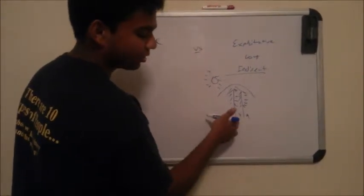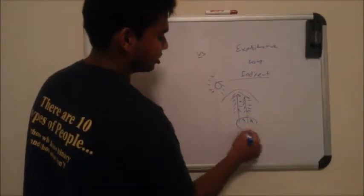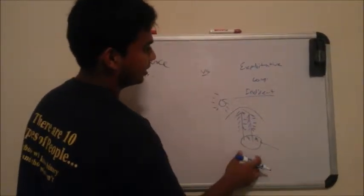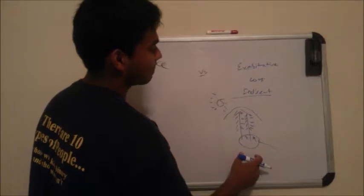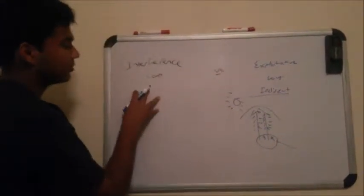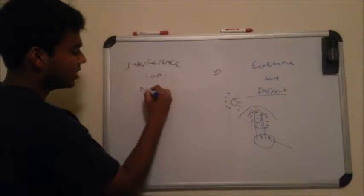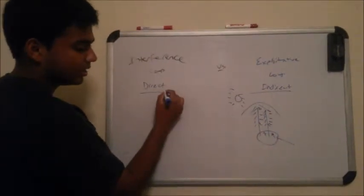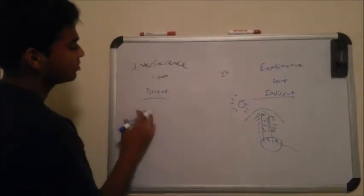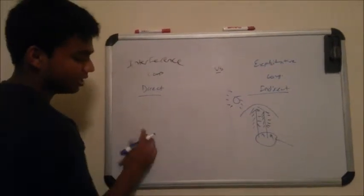The bigger trees out-compete the little trees, and the little trees are not able to survive. This is kind of indirect competition — exploitation competition. The interference competition over here is more of a direct competition, where the species directly out-compete the other.